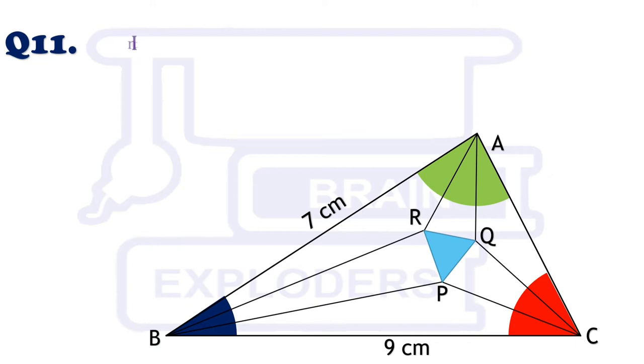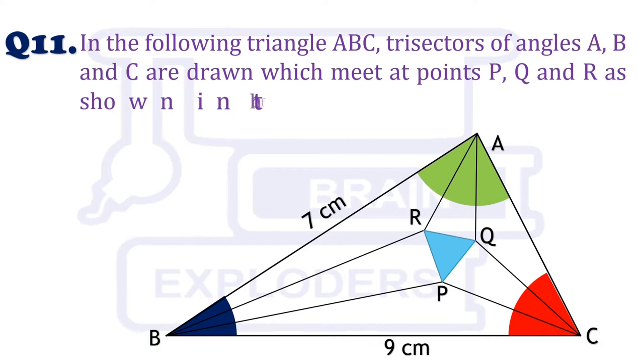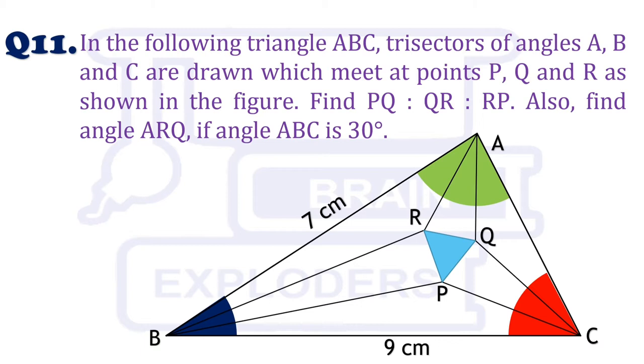In the following triangle ABC, trisectors of angles A, B and C are drawn which meet at points P, Q and R as shown in the figure. Find PQ ratio QR ratio RP. Also find angle ARQ if angle ABC is 30 degrees.